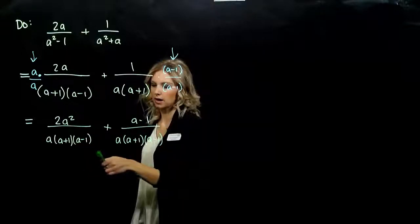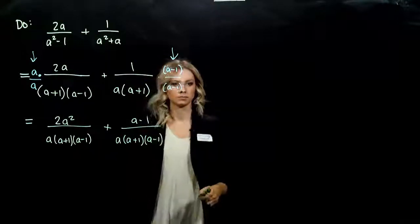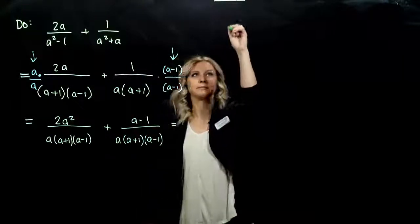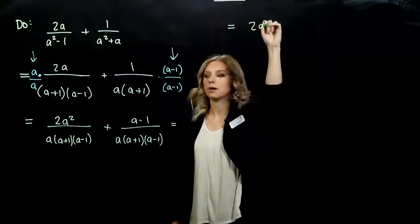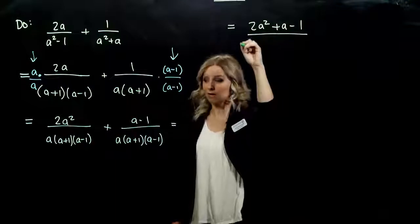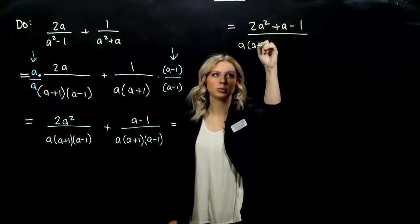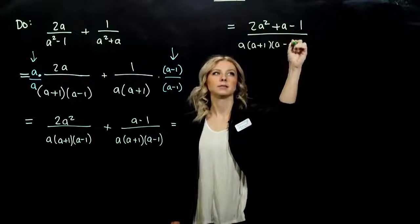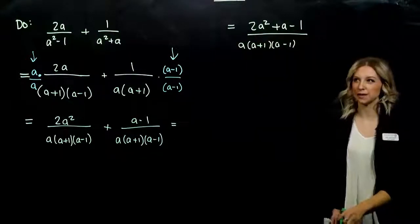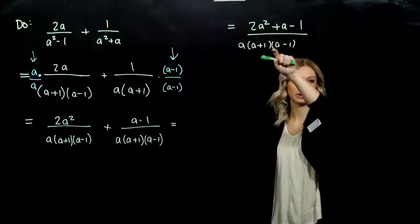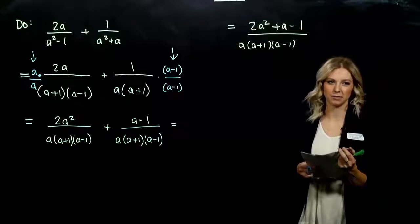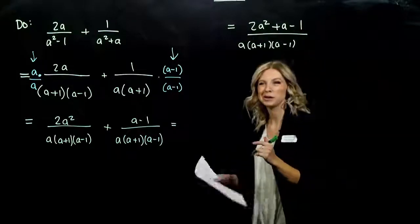Since we have common denominators, let's combine those terms. Up top I've got 2a squared plus a minus one, and that's all over a times (a plus one) times (a minus one). So we need to factor the thing up top to see if we can cancel anything out with our denominator. If we had multiplied out the denominator, we'd have to be refactoring it right now — pain in the butt.